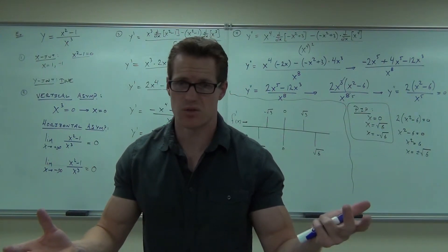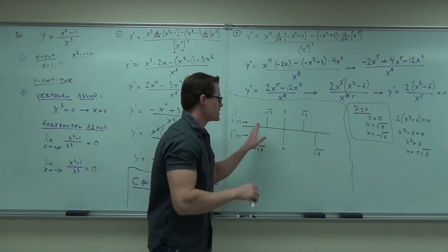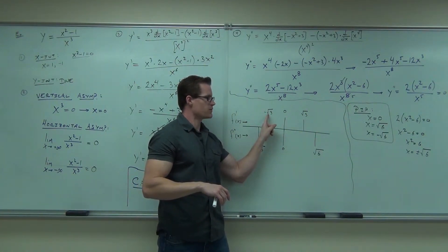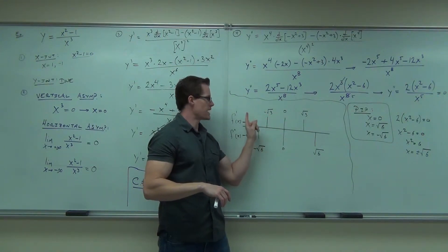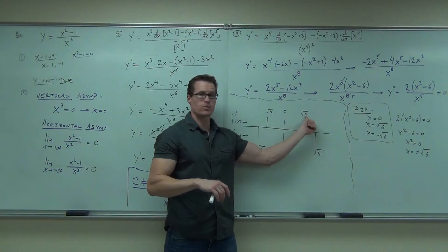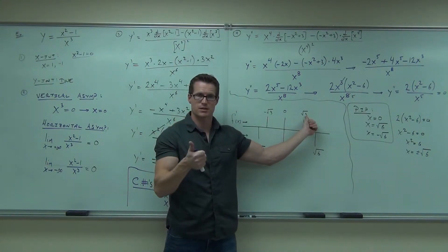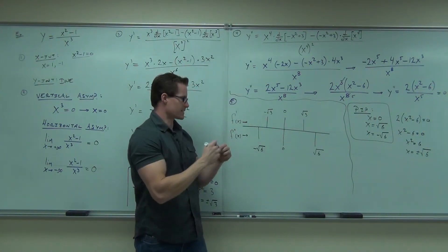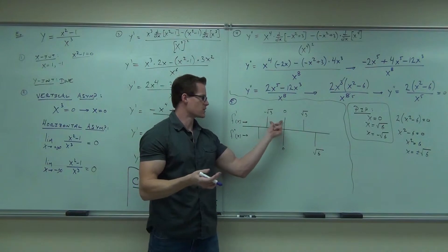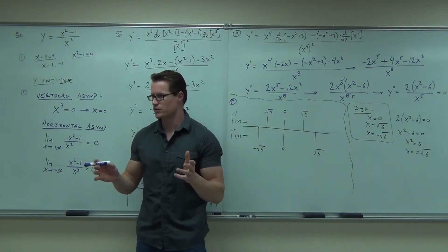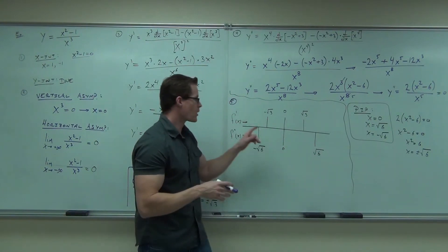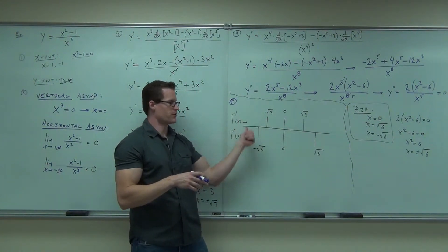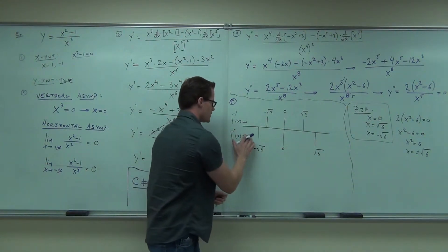Now, what do you do after you find those numbers? After you have negative root three, zero, root three — you test them in the general intervals. You need to know what happens in each little interval. We're going to plug in points from the first derivative intervals into the first derivative, and the inflection intervals into the second derivative. So let's go ahead and try that.